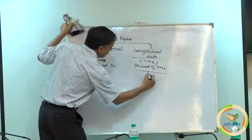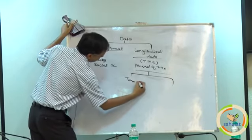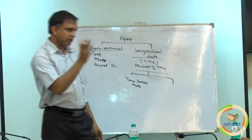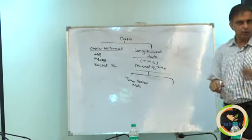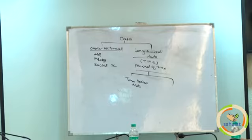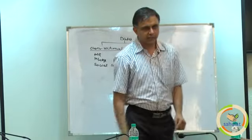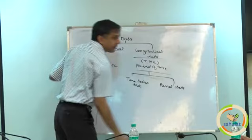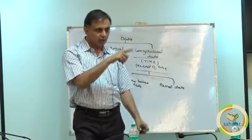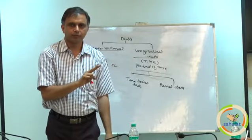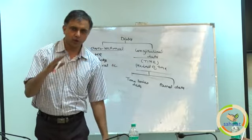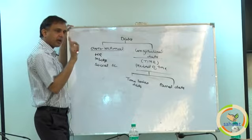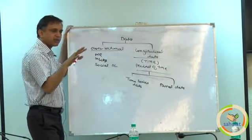Longitudinal data can further be divided into two. If you take only one variable, it is called time series data. One variable — earnings per share — for the last 10 years, that is time series data. So one variable is time and the other is one simple variable. If I note down her weight for the last 10 years, that is time series data. When along with weight I also note down other things, that is called panel data. Time series is one variable; panel data is many variables over a longer time period.